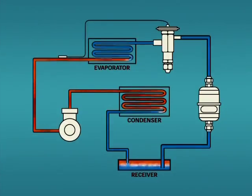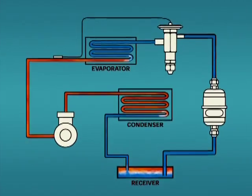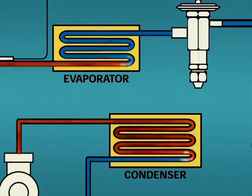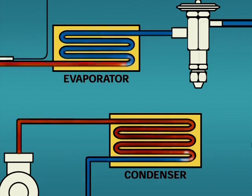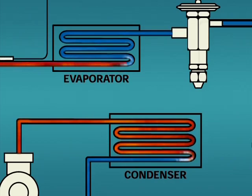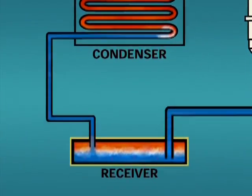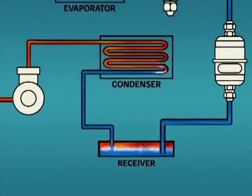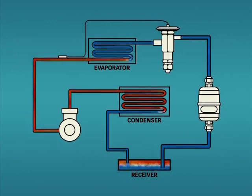Saturated refrigerant must exist in two places of a normal operating system: in the evaporator and in the condenser. This is due to the fact that the refrigerant becomes a liquid and vapor mixture in the evaporator and condenser. Anytime you have a liquid and vapor refrigerant mixture, the refrigerant will be at saturation.